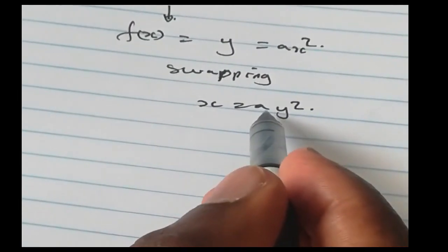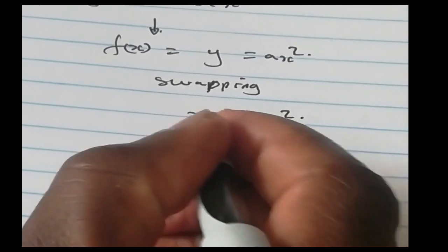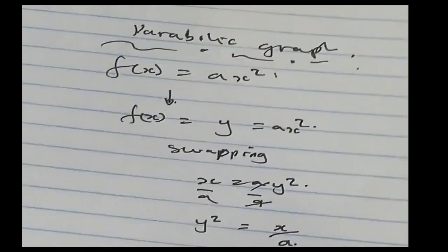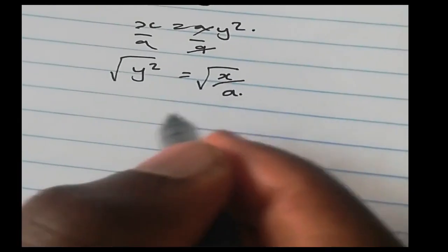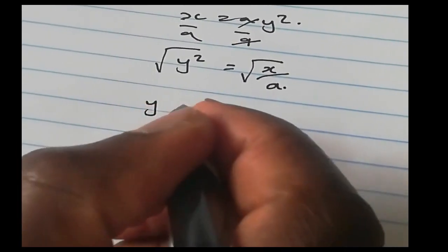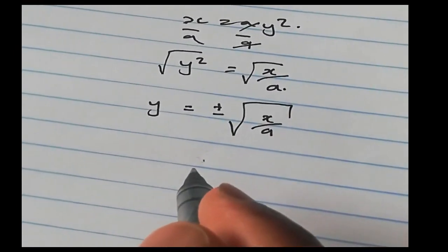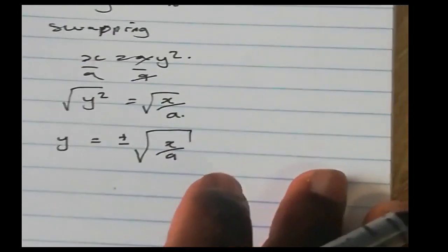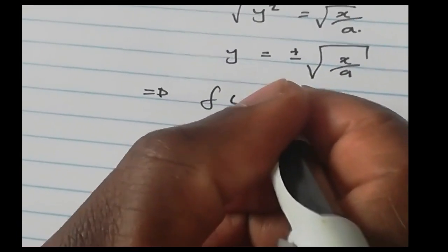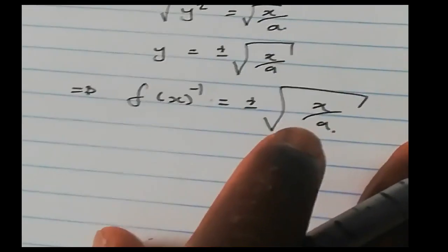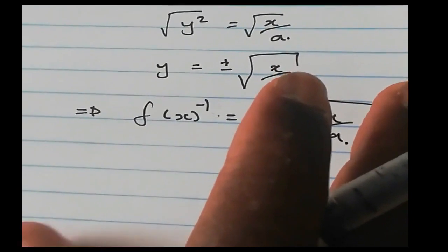Then we make y the subject. Dividing both sides by a gives y² = x/a. Finding the square root on both sides, we get y = ±√(x/a). Remember the square root gives two answers: plus and minus. So the inverse notation is f⁻¹(x) = ±√(x/a).